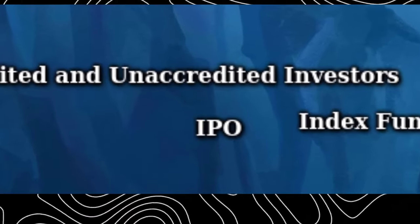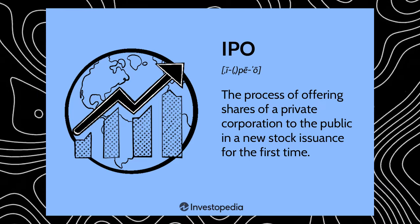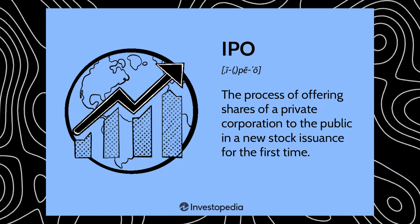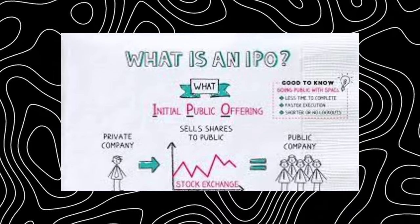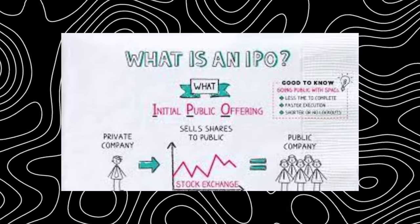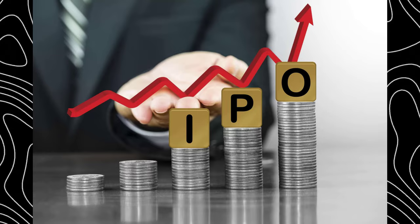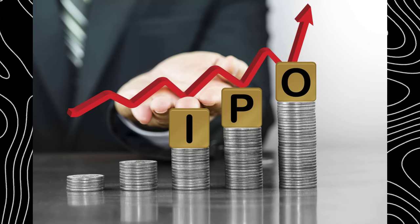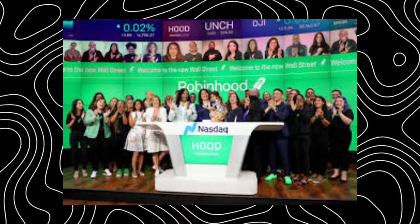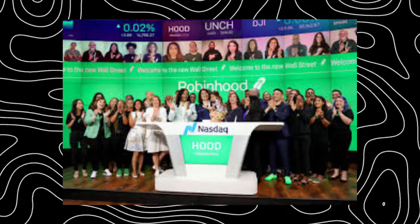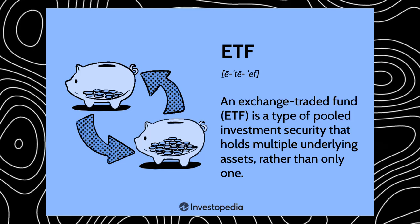IPO: an Initial Public Offering occurs when a private company becomes public by offering its shares on the stock market for the first time. This is a way for companies to raise capital and access public investors. For new investors, IPOs can offer a chance to get in on the ground floor — for example, Apple IPO'd in 1980 and has since returned nearly 140,000%. The process is a long road involving investment bankers, financial advisors, and regulatory filings with federal agencies before a company can be publicly traded.